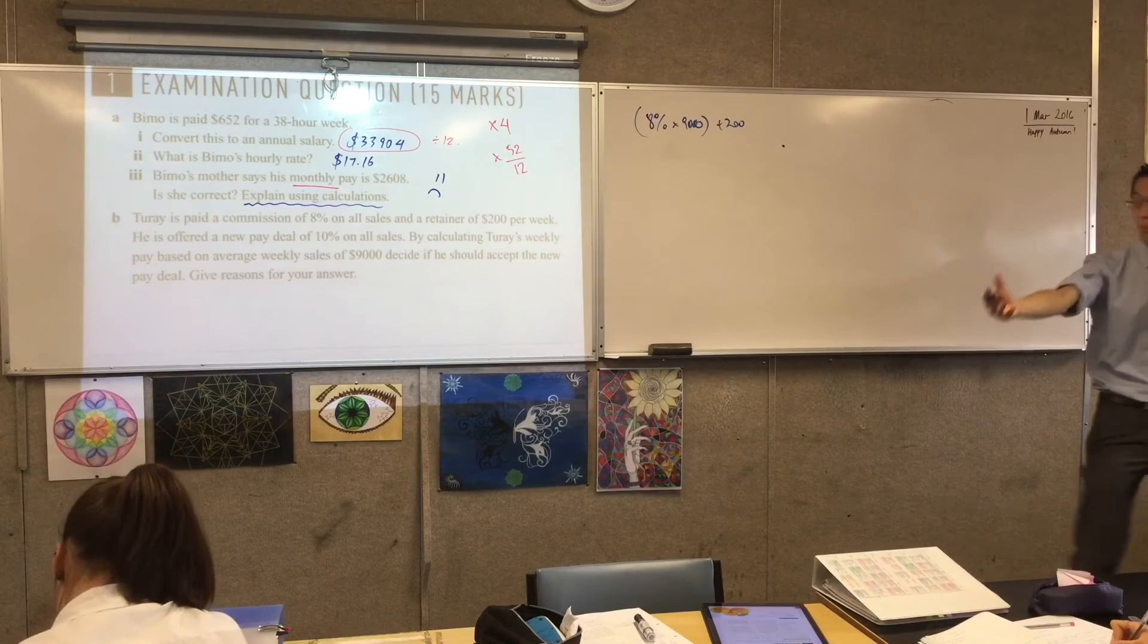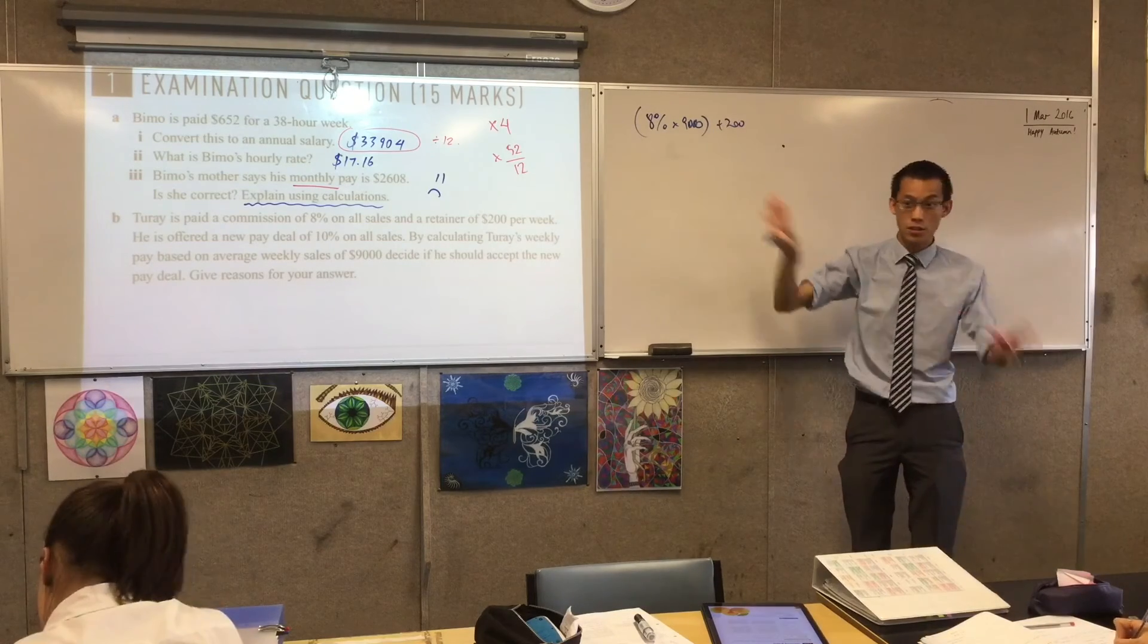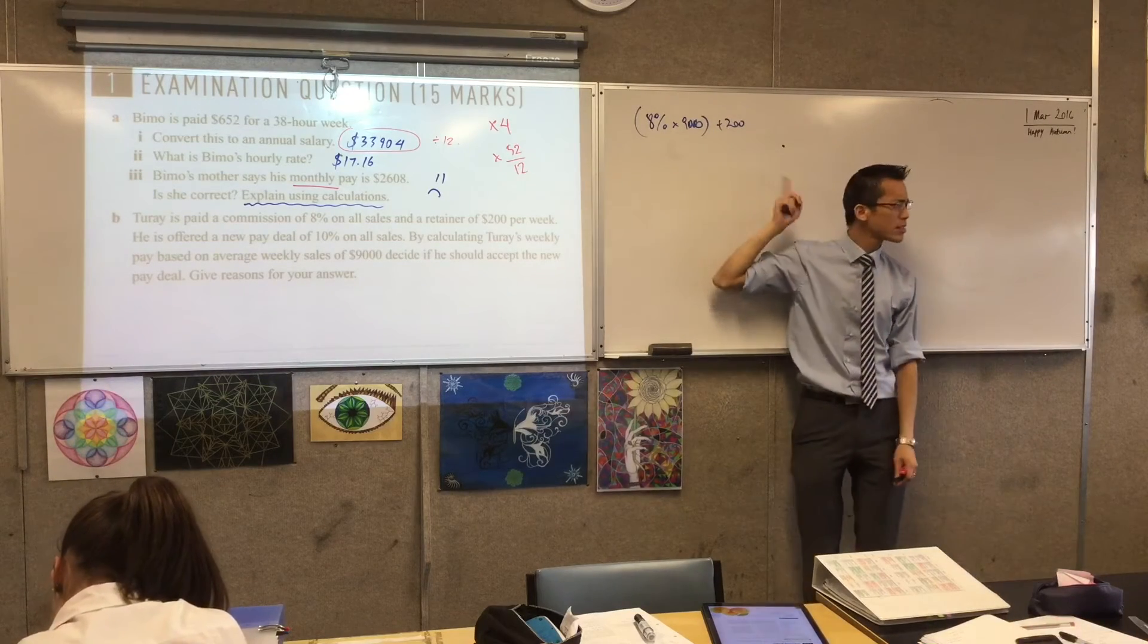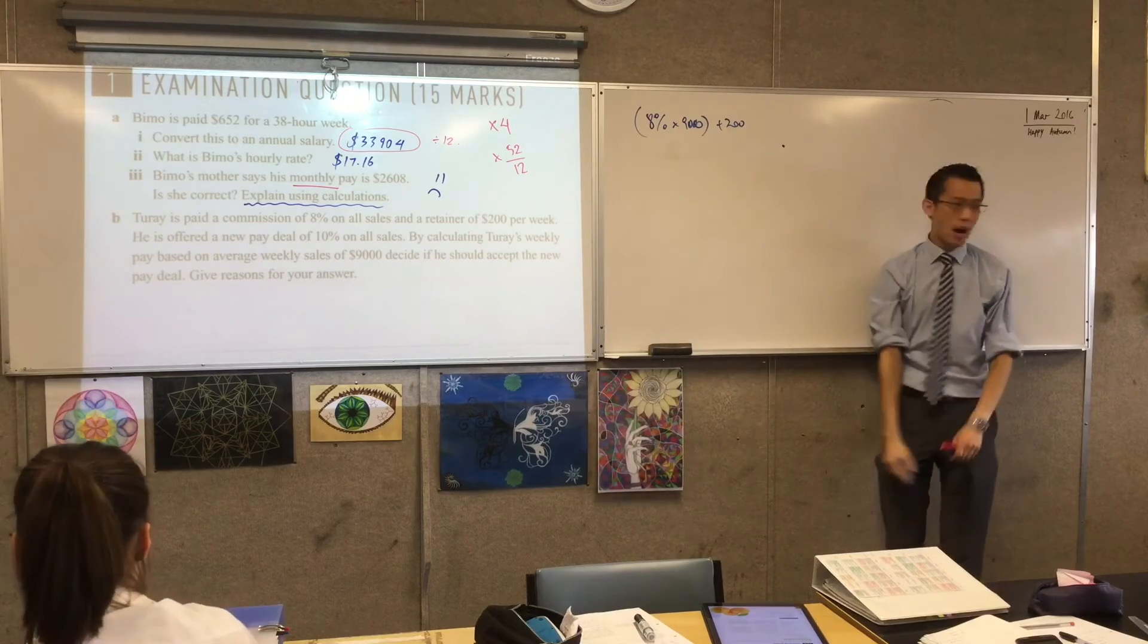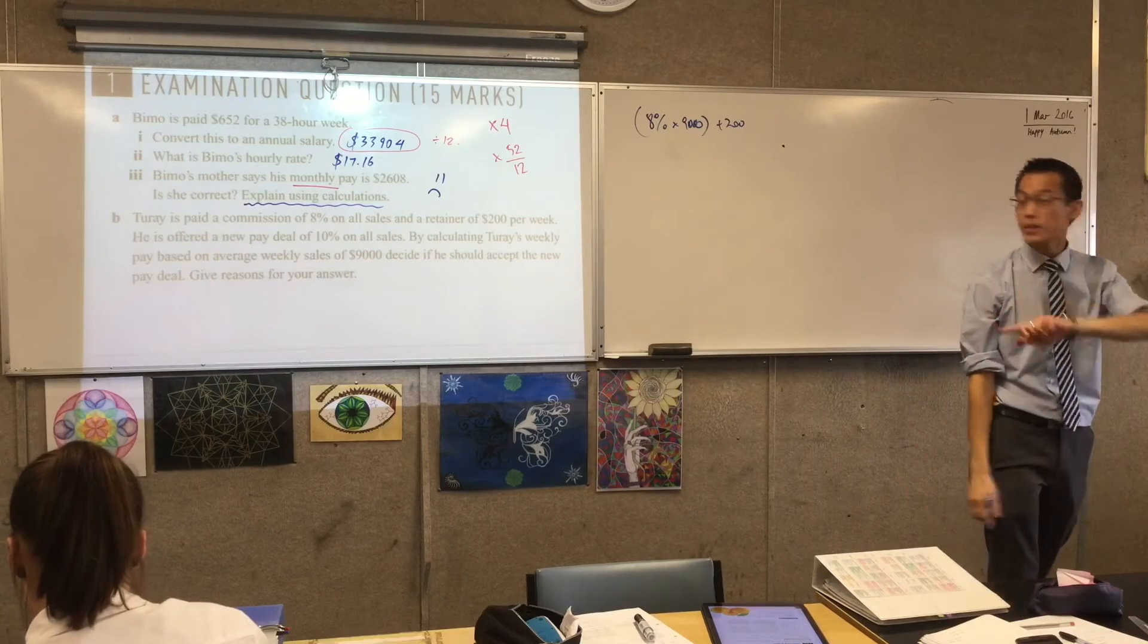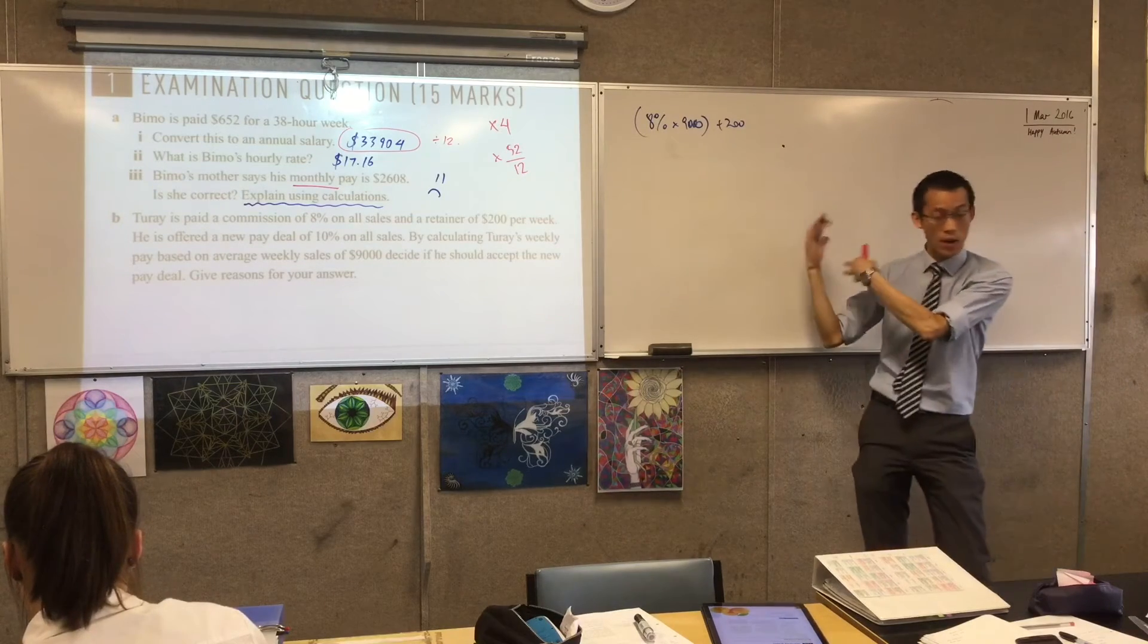This is perfect, and the brackets help us understand. There's two different pieces here, not to be confused. What are the two pieces? Commission. Commission here, and retainer there. Good, okay. I'm going to add one piece of information before this, because I'm about to do a new equation as well.